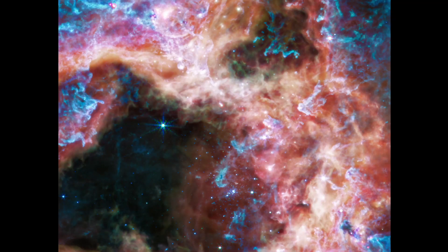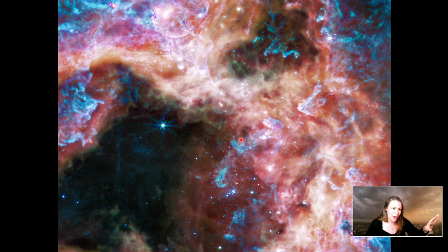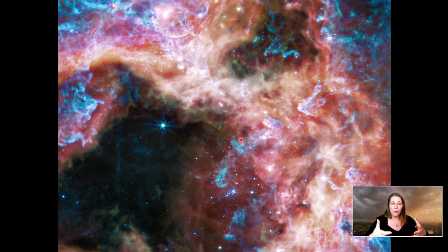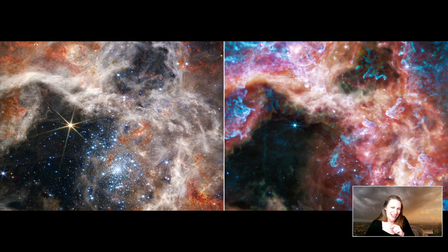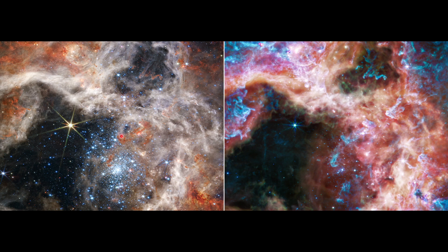When we move to the MIRI image we see basically the same structures, but this time they're colored in blue. What was rust-colored in NIRCam they've colored blue here. Part of the reason is these are false color images — you choose the color that enhances the feature you're studying. In this case with 30 Doradus, it's the dust that's important. In this side-by-side image you can really see the same structures just in different colors.